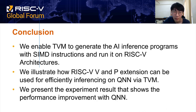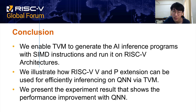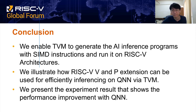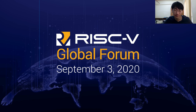In conclusion, we enable TVM to generate AI inference programs with SIMD instructions and run them on RISC-V architecture. We illustrate how RISC-V V and P-extension can be used for efficient inference on QNN via TVM. Finally, we present experimental results showing performance improvement with quantized neural networks. That's all for this talk. Thank you.